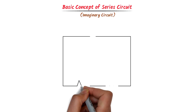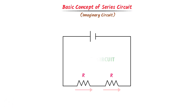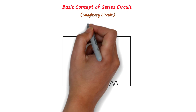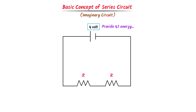Consider this imaginary circuit. We call this circuit a series circuit because here the resistors are connected in a series way, one after another. Now let the ends of this circuit be connected to a 4-volt battery. This 4-volt battery will provide 4 joules of energy to a unit charge in order to move them from the positive terminal to the negative terminal. Now consider two balls at the high potential region — one ball is one unit charge and the other ball is another unit of charge.